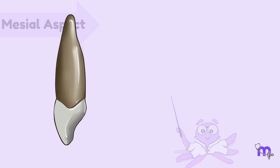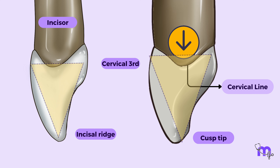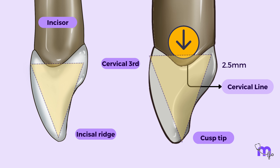Now let's turn the tooth to view the lingual aspect. The crown is narrower lingually than labially. The outlines are mirror images of the labial outline, except for the cervical line, which shows less curvature.